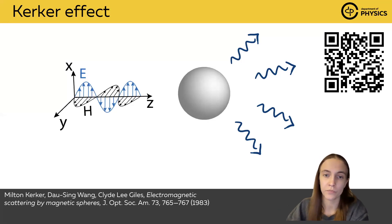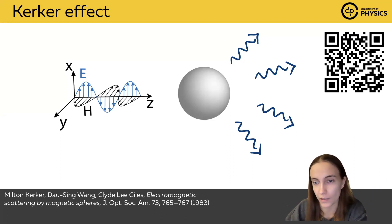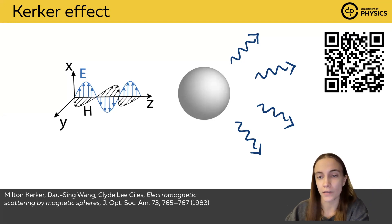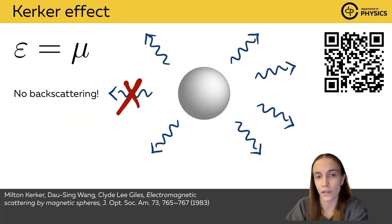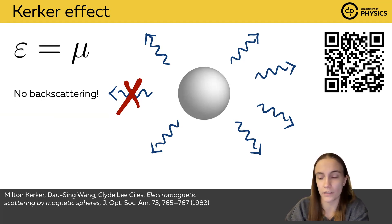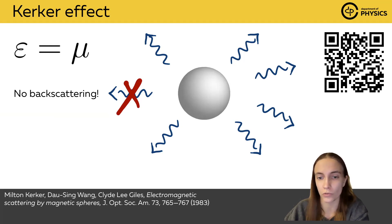Let's now move to the Kerker effect. You can find the paper by Kerker, Wang, and Giles written in 1983. In this paper they investigated the directionality of scattering by a sphere. A sphere can generally scatter in any direction, but for a sphere with epsilon equal to mu — a specific material — it was shown that backscattering is absent and is cancelled for all possible wavelengths. Other directionality effects were also studied in this paper, and now we are going to study them too.